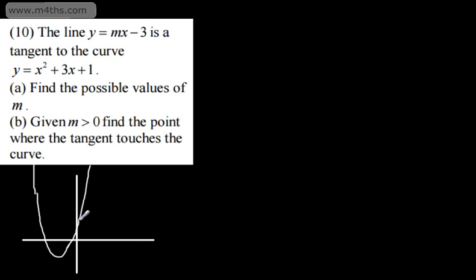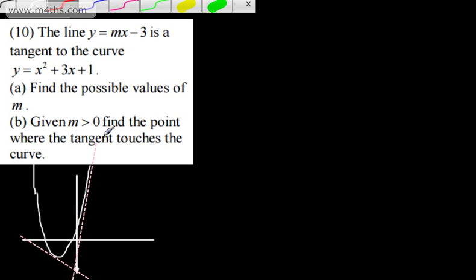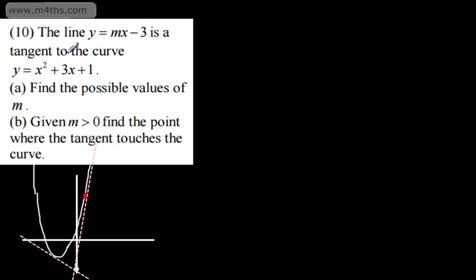We're going to have two possible values of m, and they're going to cross at the point negative 3. What we might have is a tangent that goes through this point and touches the curve here, or a tangent that goes through this point and touches the curve somewhere up here. So what we're looking for is simultaneous equations to set up the quadratic in x, take the discriminant, and set that to 0 to solve for m.